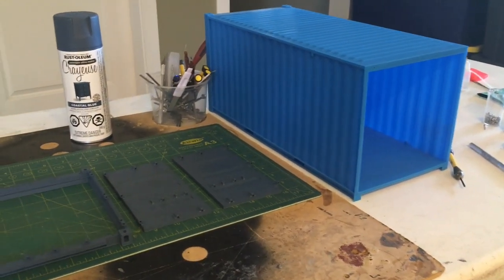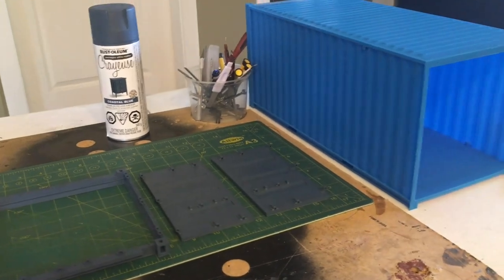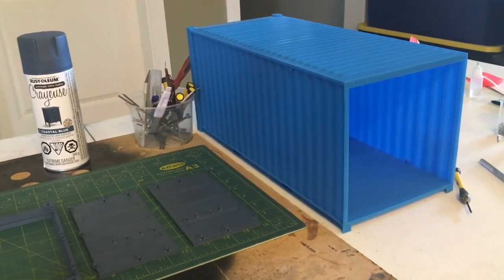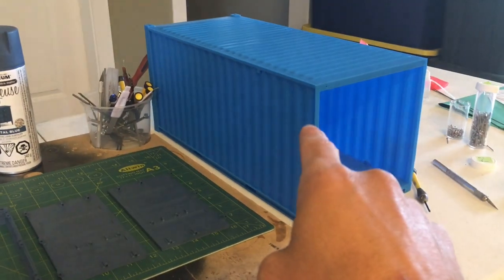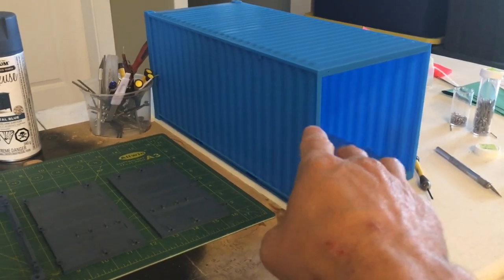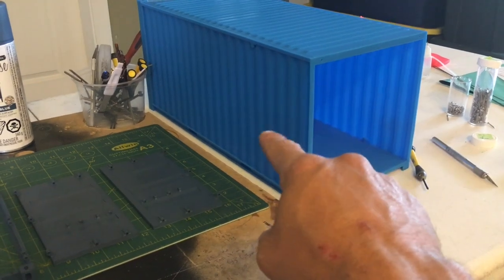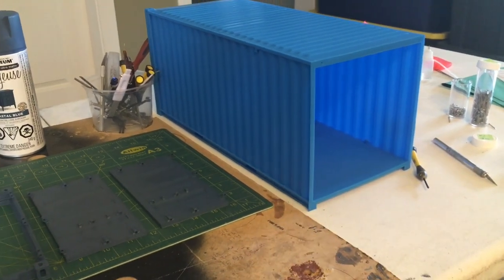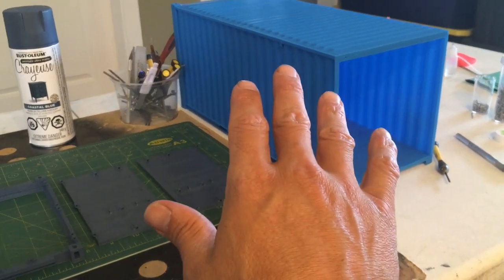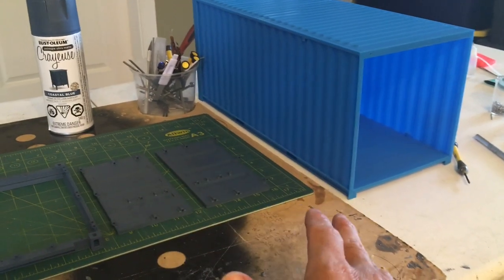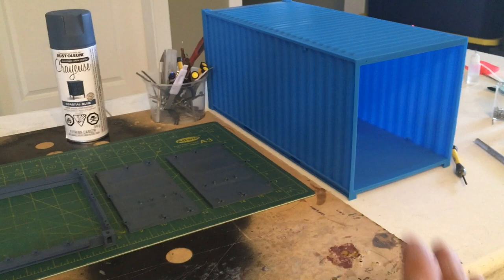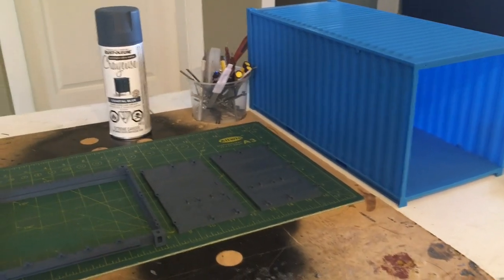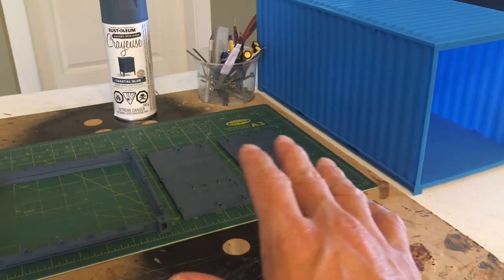All right guys, welcome to another video. Glad you could join me. Part two of this shipping container build that I've been working on. I 3D printed a 1/4 scale sea can that you saw in the first video if you've been following along, and I thought I'd do another little video just to document the footage as the build progresses. Just in case you want to build one of these yourselves, you can see what I've done, kind of the process.